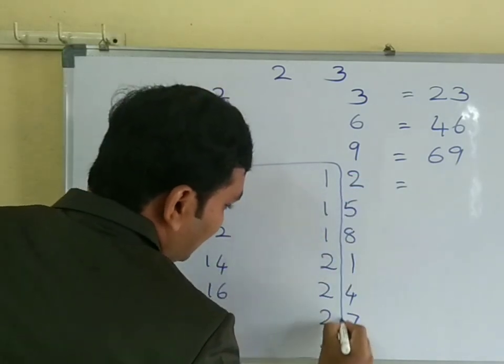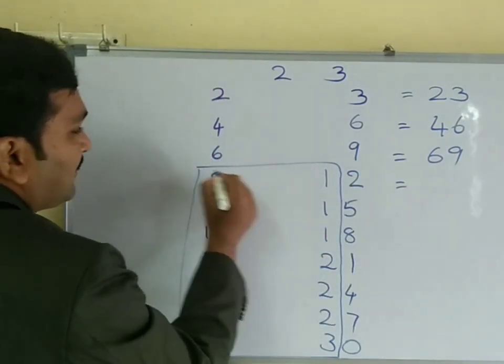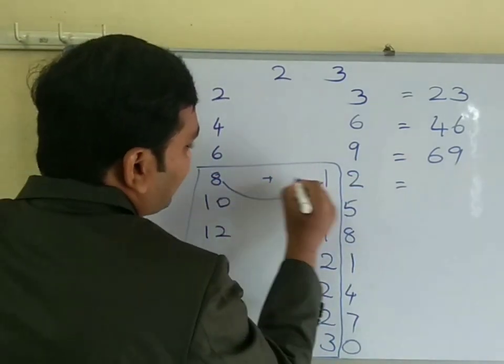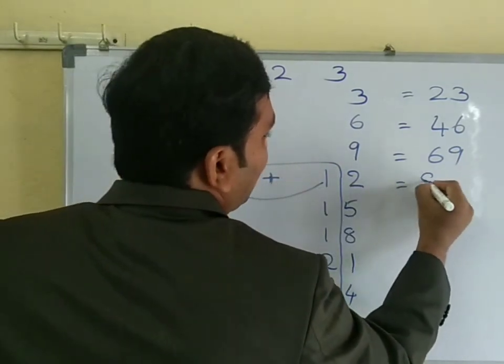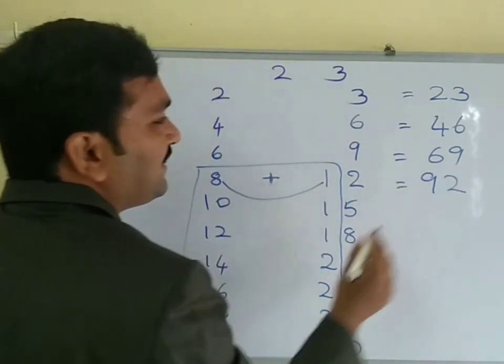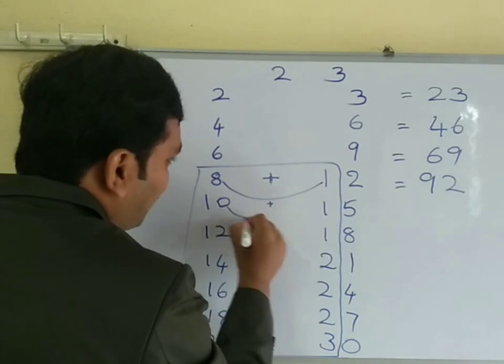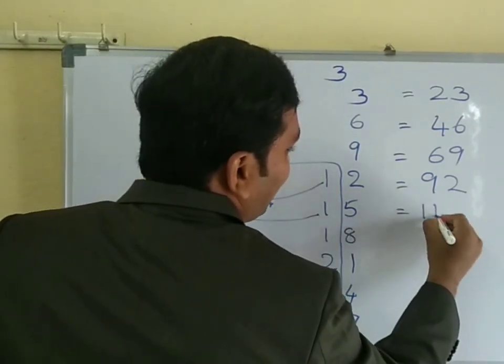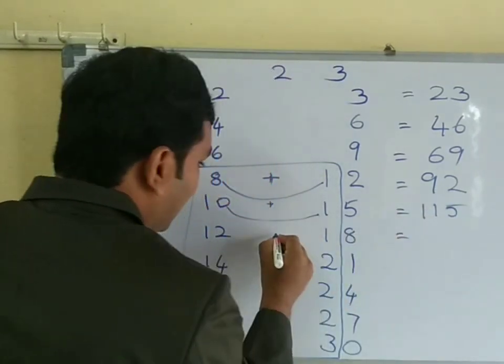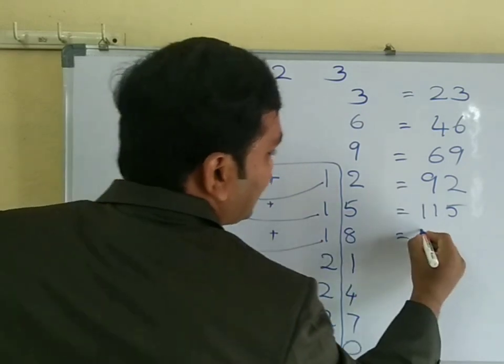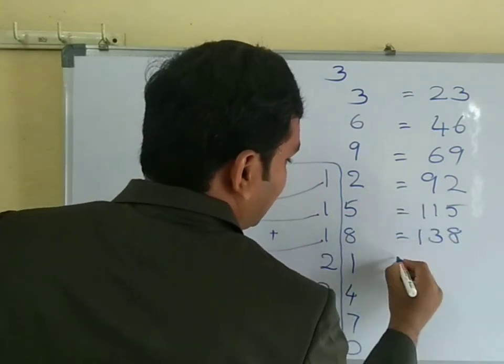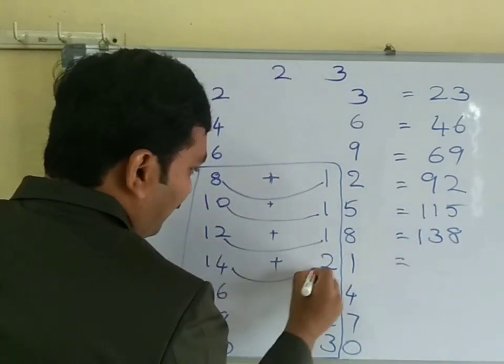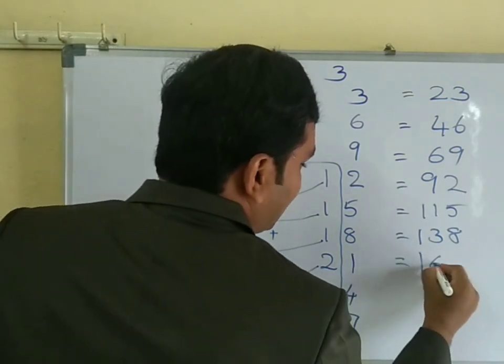For this, this number, see 8 plus 1 is 9, 9, 2 equals 92. Here 10 plus 1 is 11, 5. Here 12 plus 1 is 13, 8. Here 14 plus 2 is 16, 1.